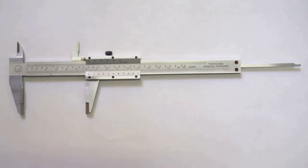It comprises inner jaws for measuring inner length, outer jaws for measuring outer length, and a rod for measuring depth. It also has a locking screw to lock the jaws in position and scales—the main scale and vernier scale—for noting readings.